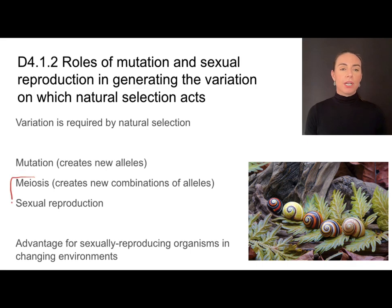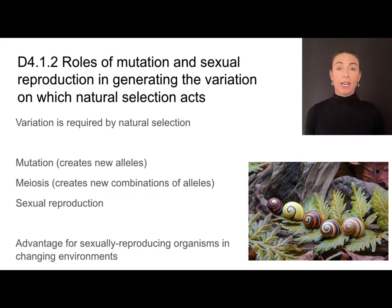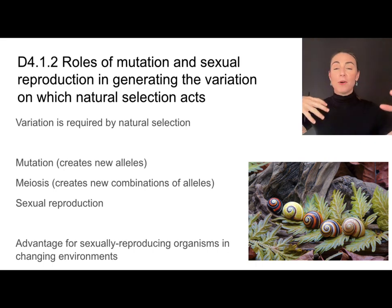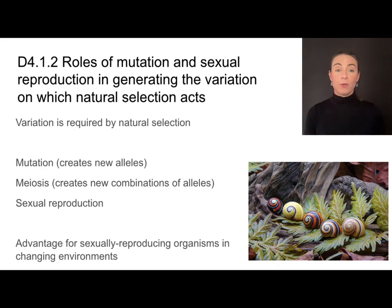Meiosis and sexual reproduction are specific to sexually reproducing organisms. Meiosis produces new combinations of alleles through things like crossing over, random orientation, and independent assortment. Sexual reproduction is the combination or fertilization of gametes that can produce an almost infinitesimal number of combinations. This is a huge advantage for sexually reproducing organisms, especially in changing environments.